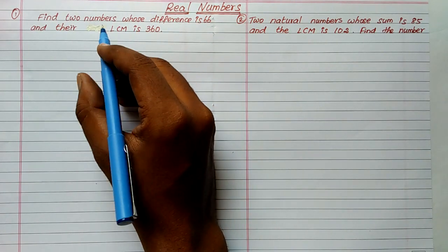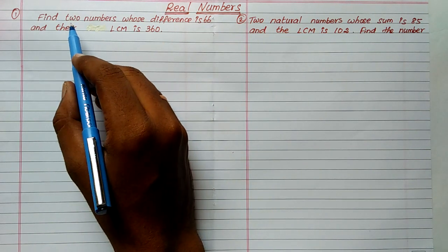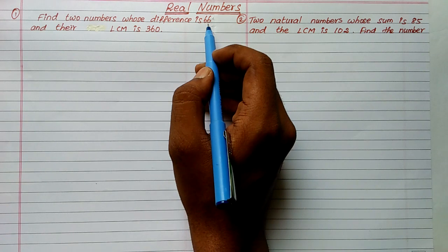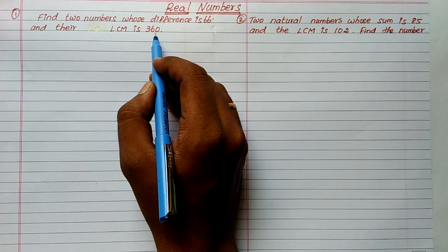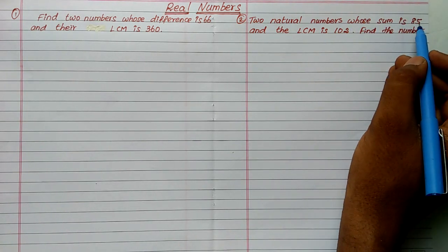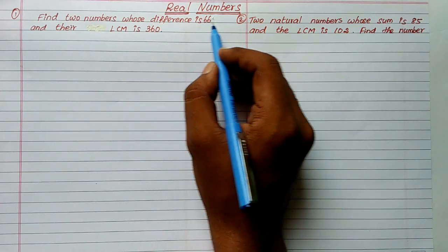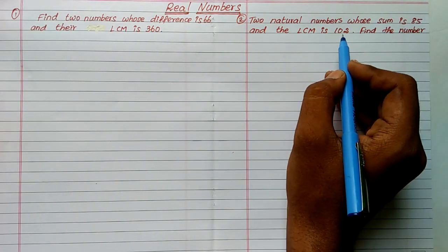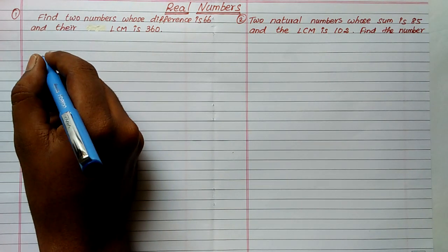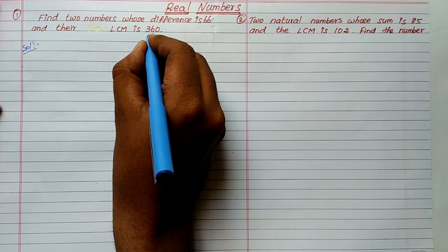Welcome to Integral Mathematics. In this session you are going to learn two kinds of sums. First: find two numbers whose difference is 66 and their LCM is 360. Second: find two natural numbers whose sum is 65 and the LCM is 102. The difference is given in the first case, and the sum is given in the second.